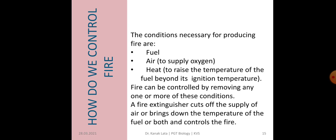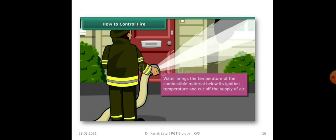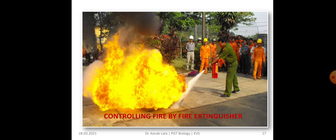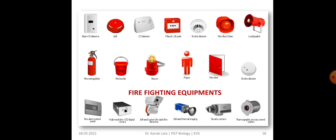Now, how do we control fire? The conditions necessary for combustion are fuel, air, and heat. Whenever one or more of these is removed, there will be no fire. Fire can be controlled by removing any one of these conditions. A fire extinguisher cuts off the supply of air, or brings down the temperature of the fuel, or both, to control the fire. Water brings the temperature of the combustible material below its ignition temperature and also cuts off the supply of air, so water helps in controlling fire. Fire is also controlled by fire extinguishers, and here are some fire-fighting equipment.